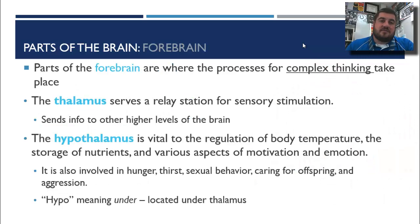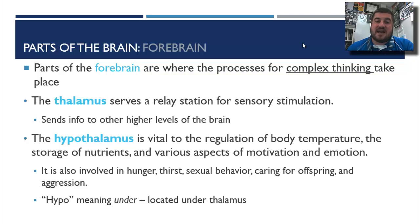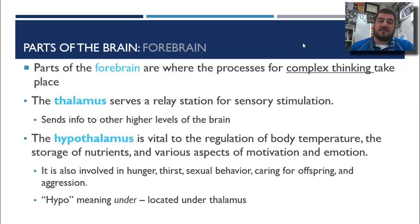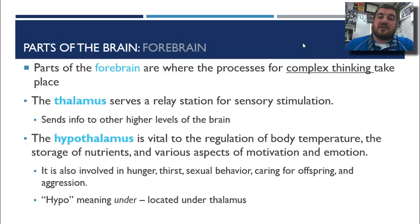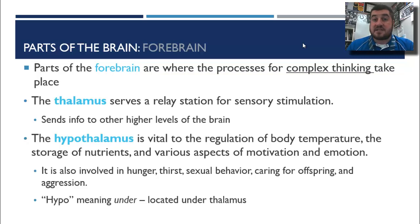The forebrain is where most of the parts are, and that's where we'll focus. The forebrain is where complex thinking processes take place. The thalamus is a relay station — think of it as a train station where all sensory information comes in, and then it sends it all out to where it needs to go in the higher levels of the brain. Every sense goes through there except for smell.